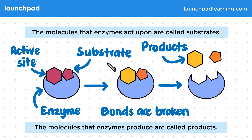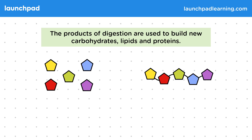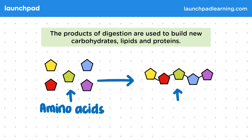So this is how enzymes work. Now let's have a look at what the products of digestion are used for. The products of digestion are used to build new carbohydrates, lipids and proteins. Bear in mind that not all enzymes break things down — synthesis enzymes can build new substances. For example, amino acids being used to build new protein chains.